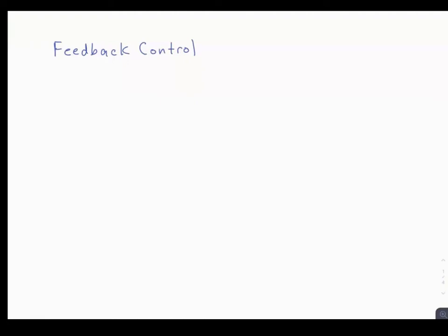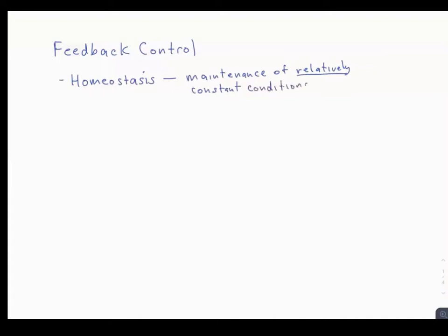We're going to talk about feedback control, and we need to discuss first homeostasis. The definition, for our purpose, is maintenance of relatively constant conditions. For the body, this would be things like blood pressure, blood glucose, plasma osmolarity, etc.